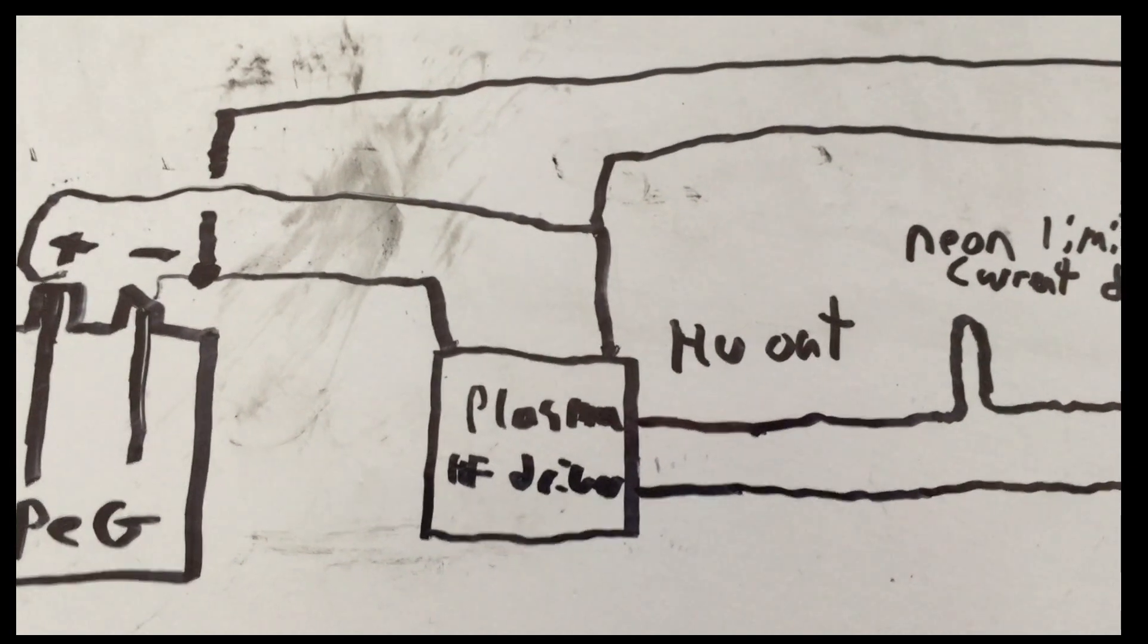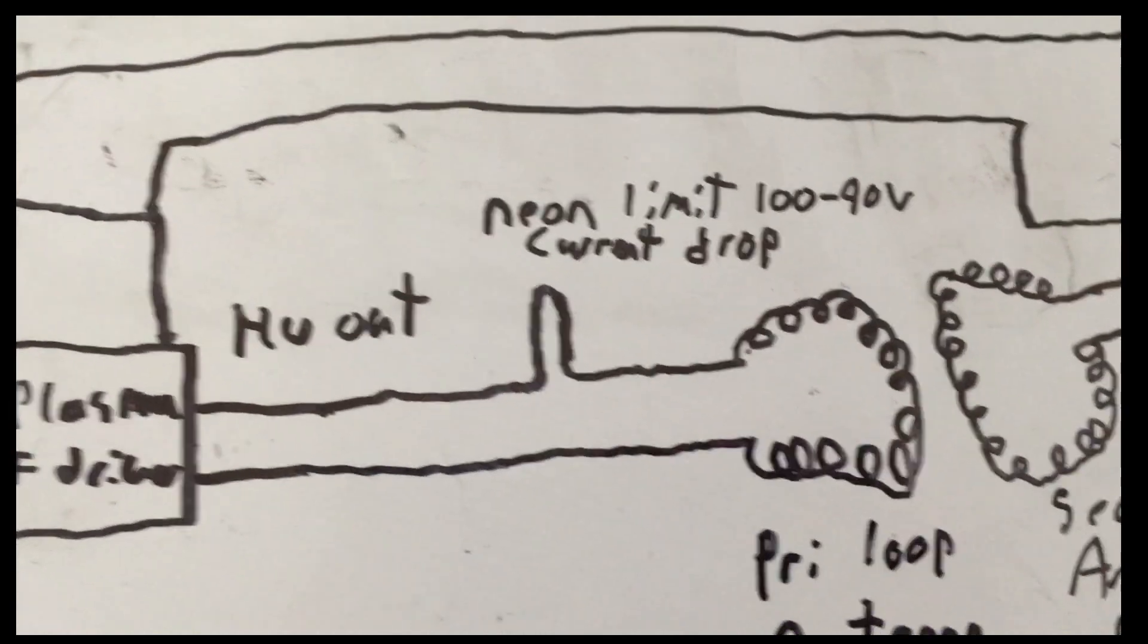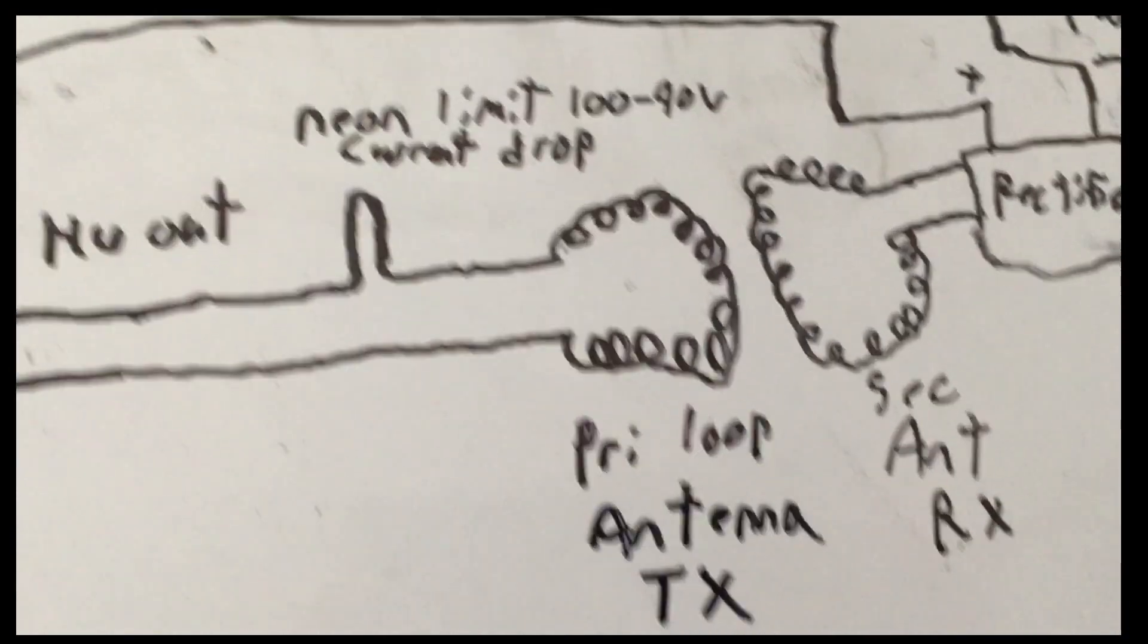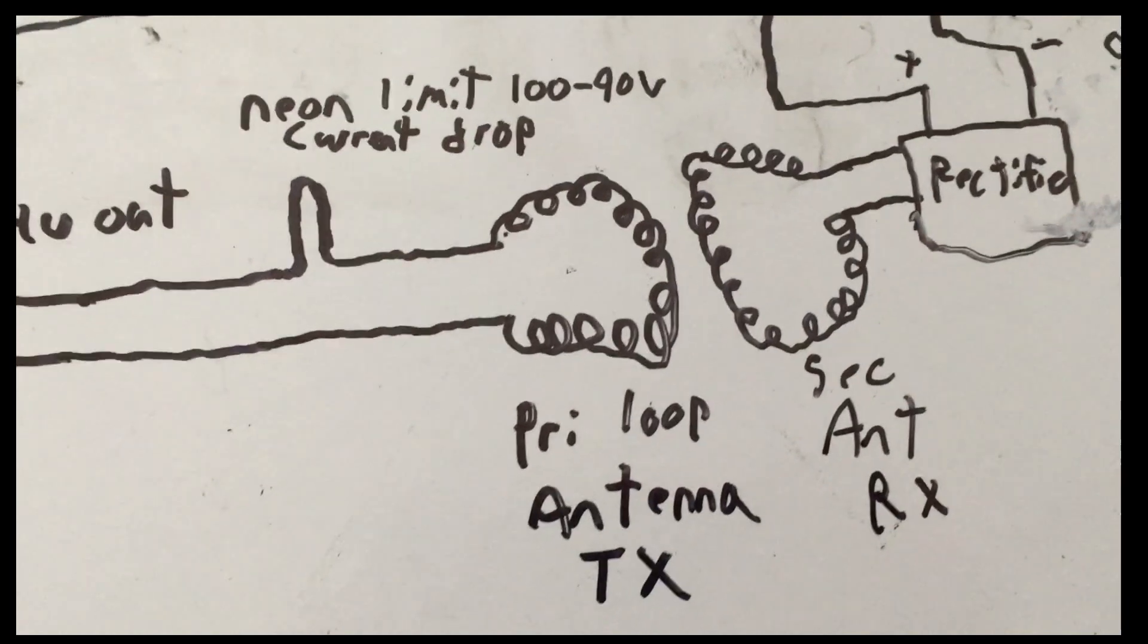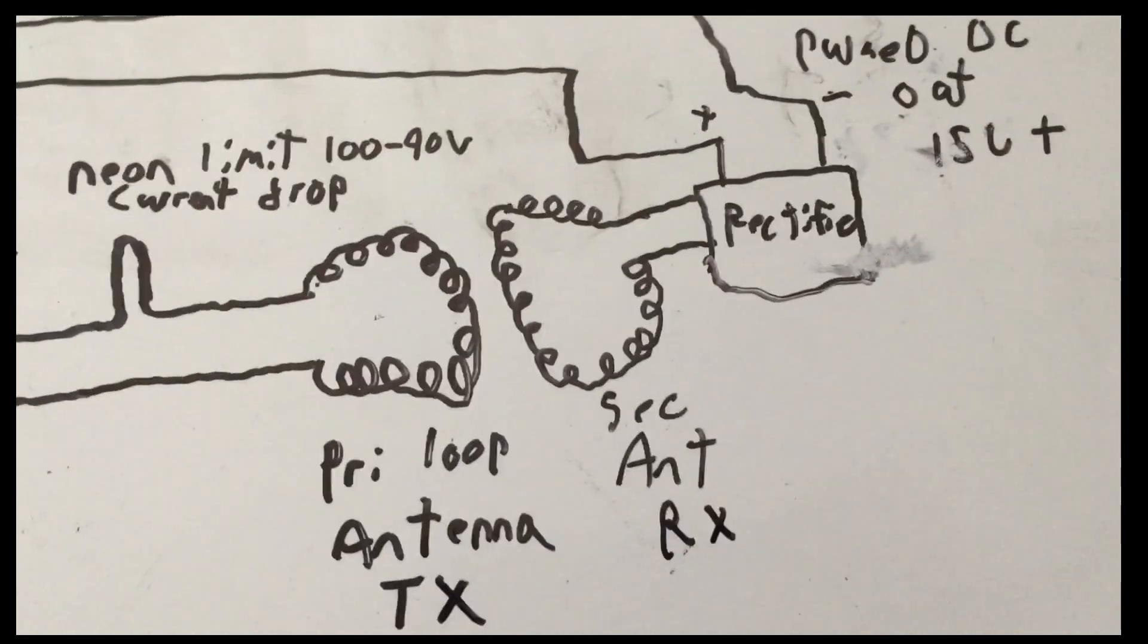It gives thousands of volts out, but I've got the neon here that limits it to roughly 190 volts current drop. We're running it as a transmitter, so it's an antenna configuration, essentially, with primary loop and secondary, as many as I want.